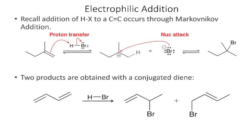Last semester, when we talked about addition reactions to alkenes, one of the things we looked at was adding HX, where X is a halogen, to an alkene. We said that this addition happened in a Markovnikov fashion — the halogen ends up on the more substituted carbon of the two connected by the double bond, and the hydrogen ends up on the less substituted.